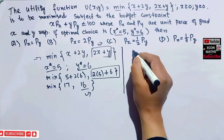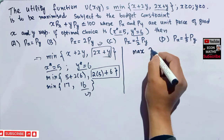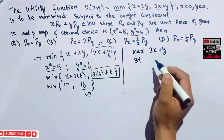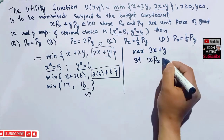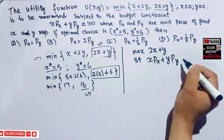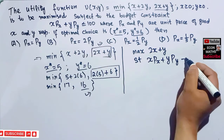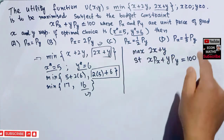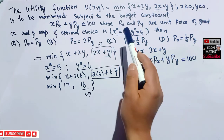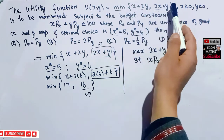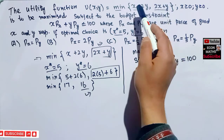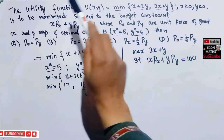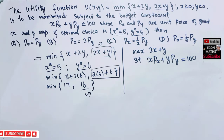We have to maximize 2x+y subject to the budget constraint x·px + y·py = 100 (we use equality for optimization). This reduced form arises because when we plug in the optimal values of x and y, the minimum comes from this expression — so we maximize 2x+y subject to the budget constraint.